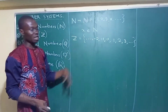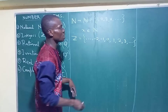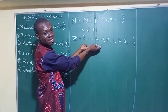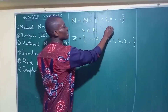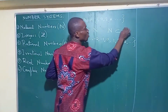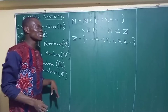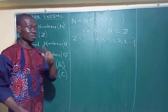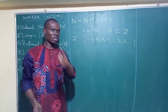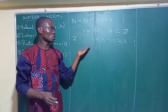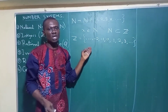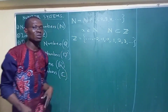Now, if you watch this carefully, you will correctly see that all of the natural numbers are contained inside the set of integers. That is to say that the set of natural numbers is actually a subset of the integers — every natural number is an integer. However, note that the reverse is not the case. Not all integers are natural numbers. For example, minus 2 is an integer but it is not a natural number.